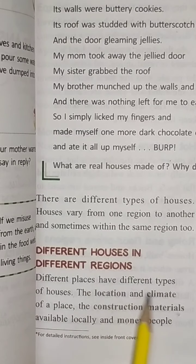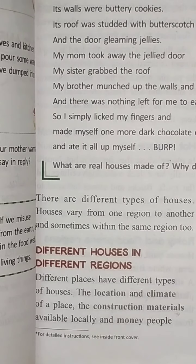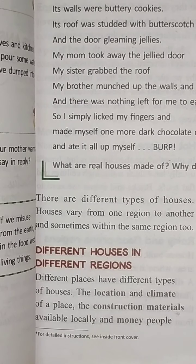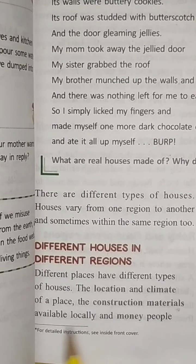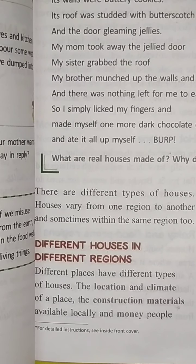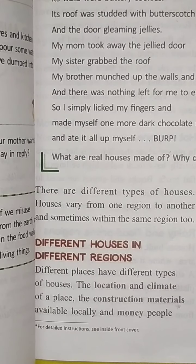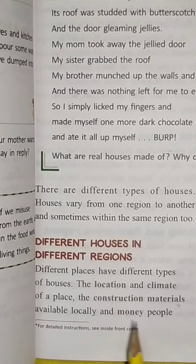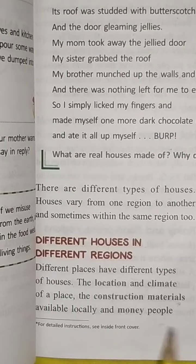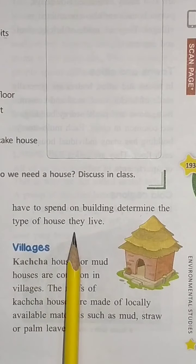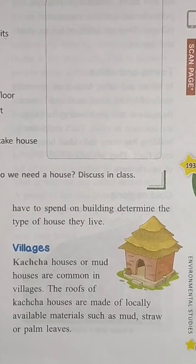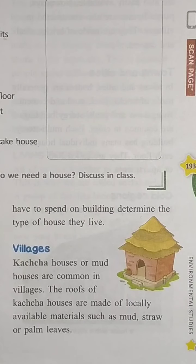Different places have different types of location and climate. Matlab location, wo jis location mein hain aur kis tarah ka vatavaran hain — garmi hai, sardi hai, barish girti hai. The construction materials available locally — ghar banane ke liye jo bhi cheezein zarurati hoti hain, woha aasani se unhe milti hain ki nahin. And money — paesa unhe available hoga ki nahin.